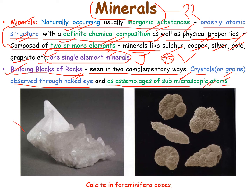The other way is as an assemblage of sub-microscopic atoms. Here is an example of the calcite mineral — you can see the structure of the calcite mineral, which is found deep inside the foraminifera oozes. Foraminifera oozes are found in the oceanic crust; these are the foraminifera, which are microfossils.